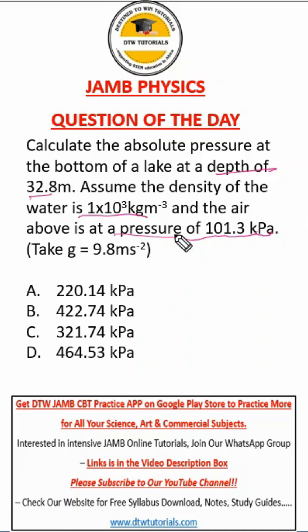Remember, your formula for pressure is P equals height times density times gravity (P = h × ρ × g). Now we're looking for the absolute pressure.